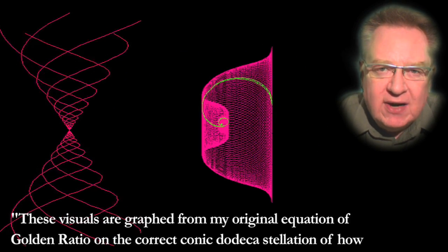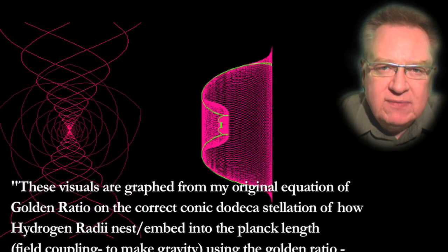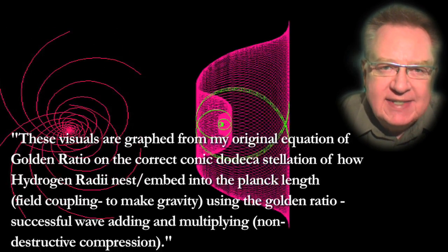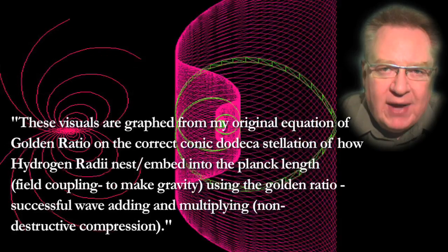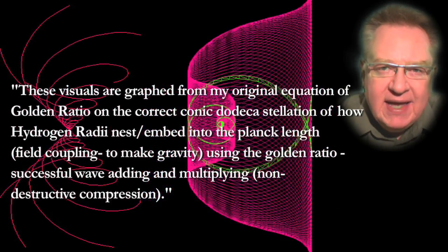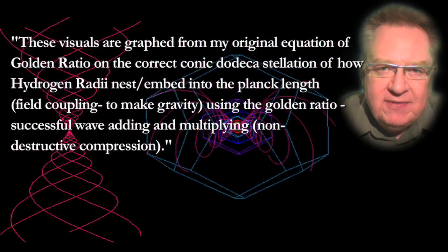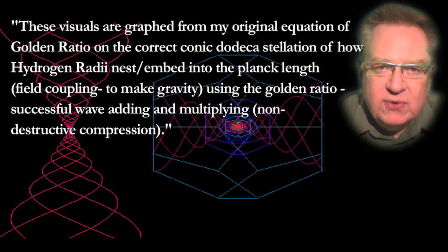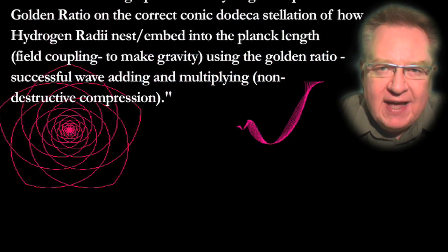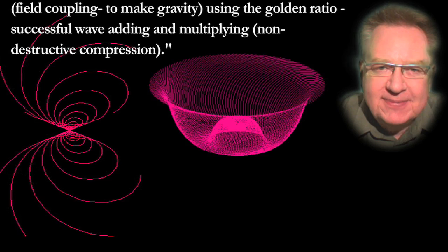These visuals are graphed from my original equation of golden ratio on the correct conic dodecastellation of how hydrogen radii nest, embed into the Planck length, field coupling to make gravity, using the golden ratio, successful wave adding and multiplying, which is non-destructive compression.